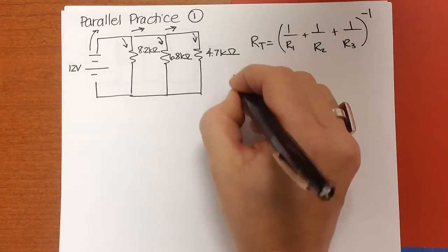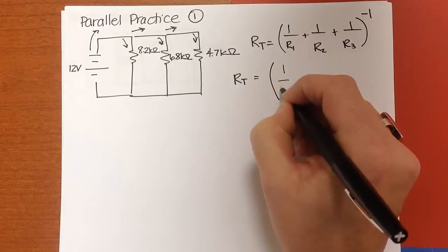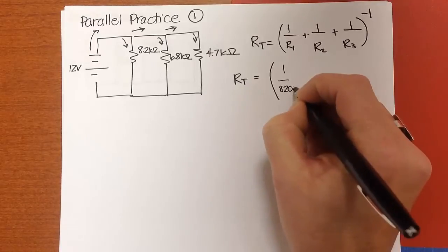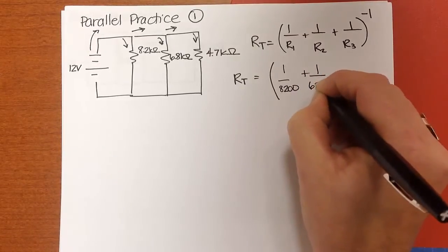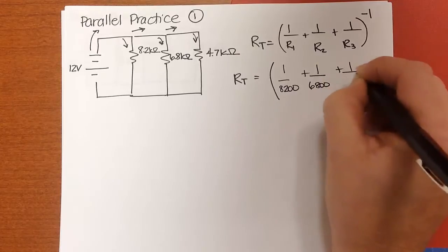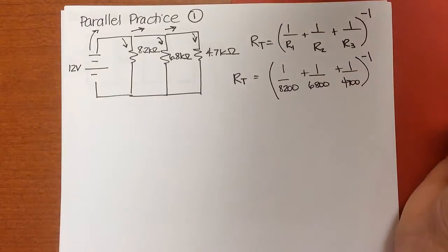So that's going to be our total is equal to 1 over 8,200 plus 1 over 6,800 plus 1 over 4,700. All of that to the minus 1.